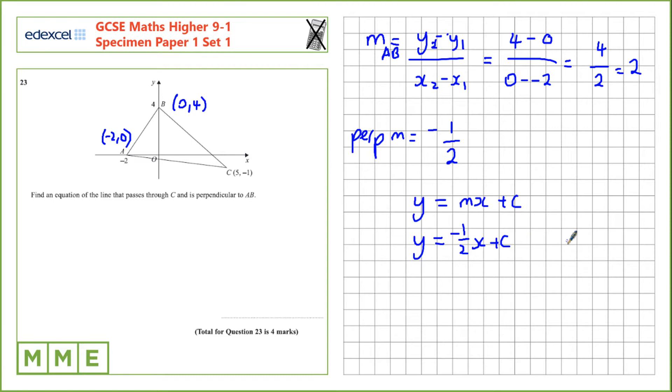If we substitute in the coordinate we've been given, 5 minus 1, we'll be able to work out C, the Y intercept. Let's substitute in, so Y is minus 1 equals minus 1 half times X, which is 5, plus C.